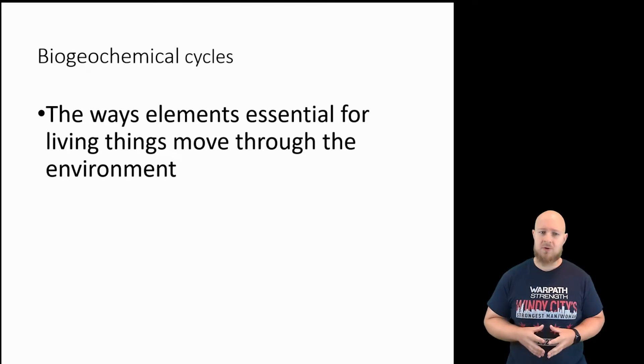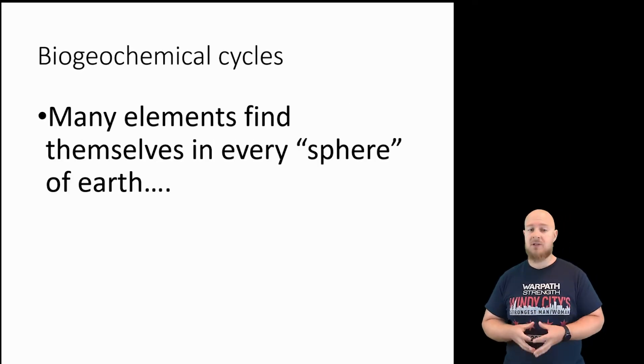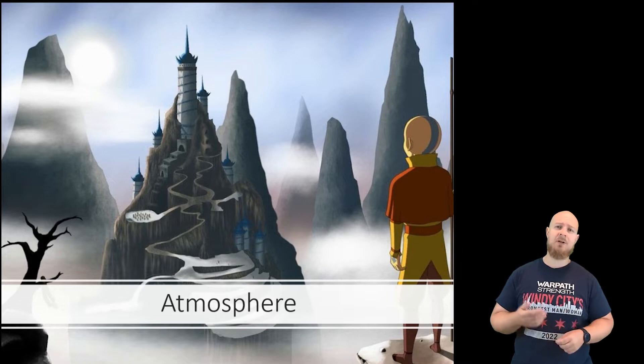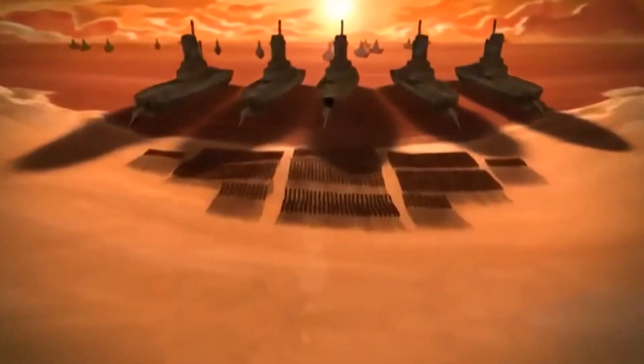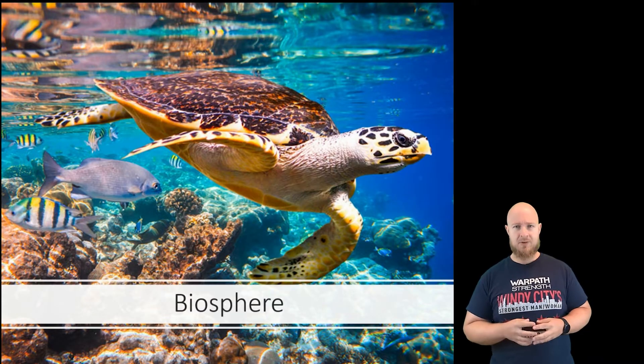Before we look at how elements actually cycle through the environment, we're going to need to go through a few definitions so you can make sense of these. Biogeochemical cycles are how elements essential for living things move through the environment. Many elements will find themselves in every sphere of the earth: the atmosphere, the hydrosphere, the lithosphere, and the biosphere.